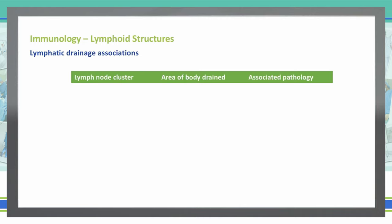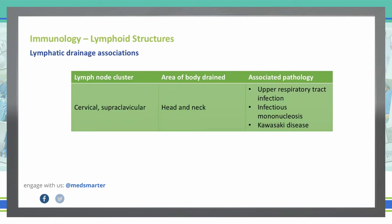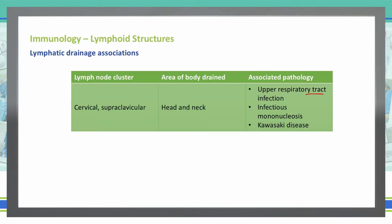We're going to break these up into clusters of lymph nodes, what it drains, and how it's associated with a pathology. Our first lymph node cluster is the cervical or the supraclavicular lymph nodes. These are in the head and neck area of the body, and they're associated with upper respiratory tract infections, infectious mono, and Kawasaki's disease.